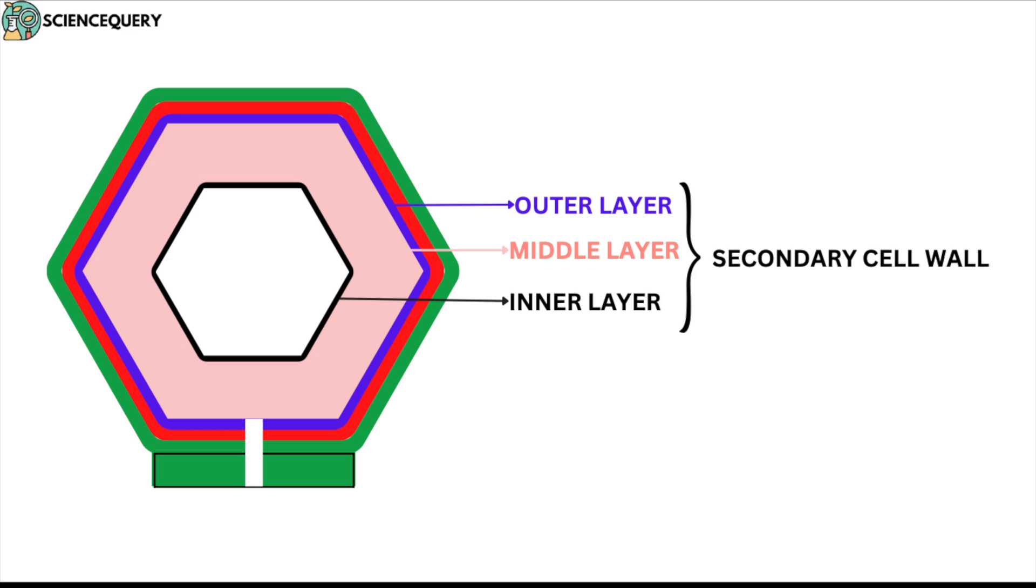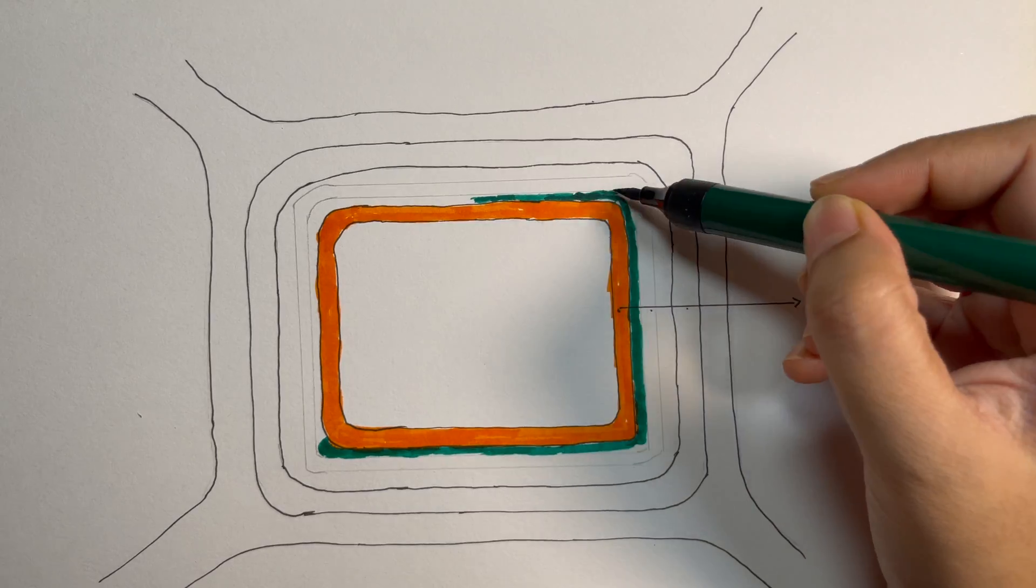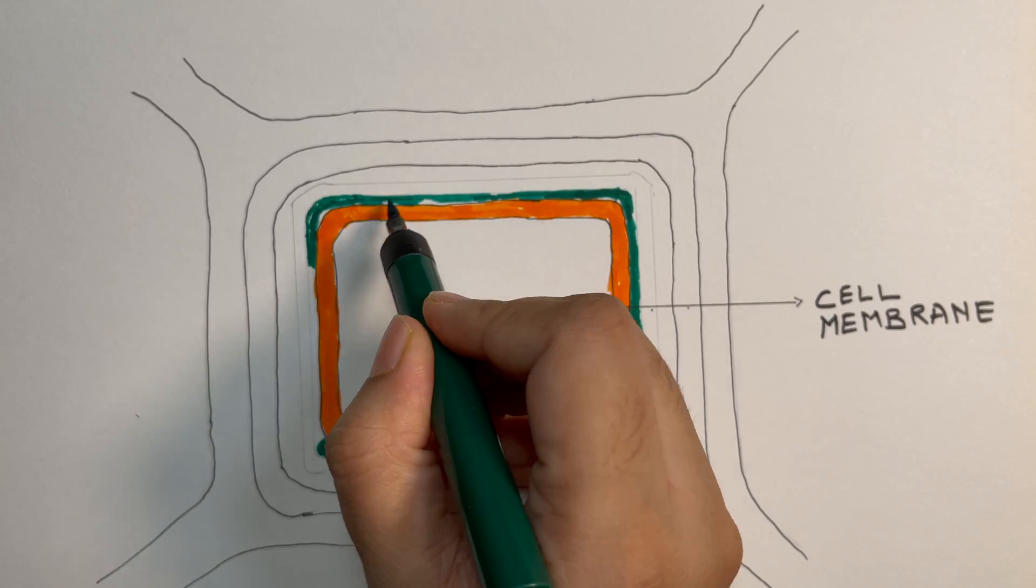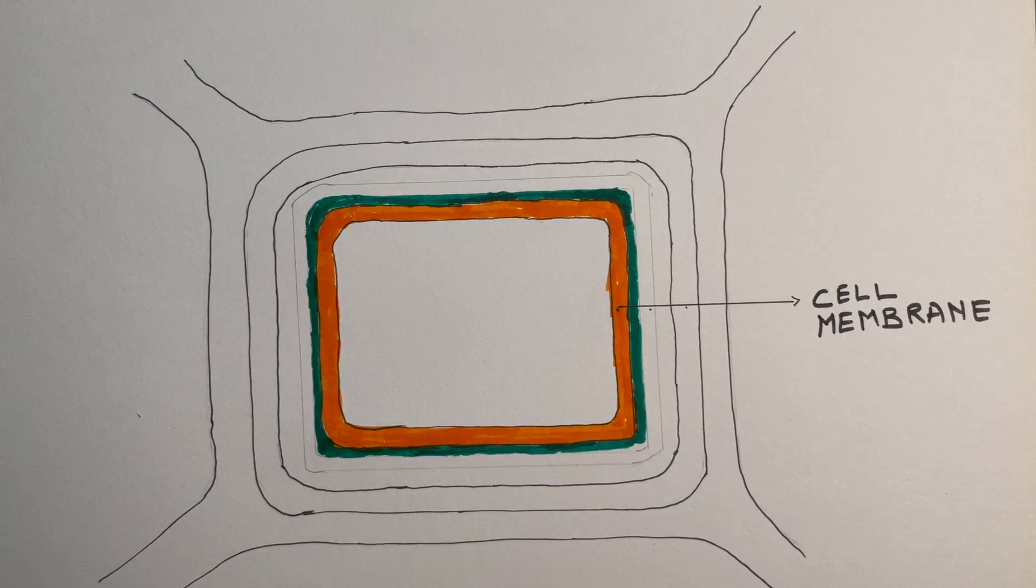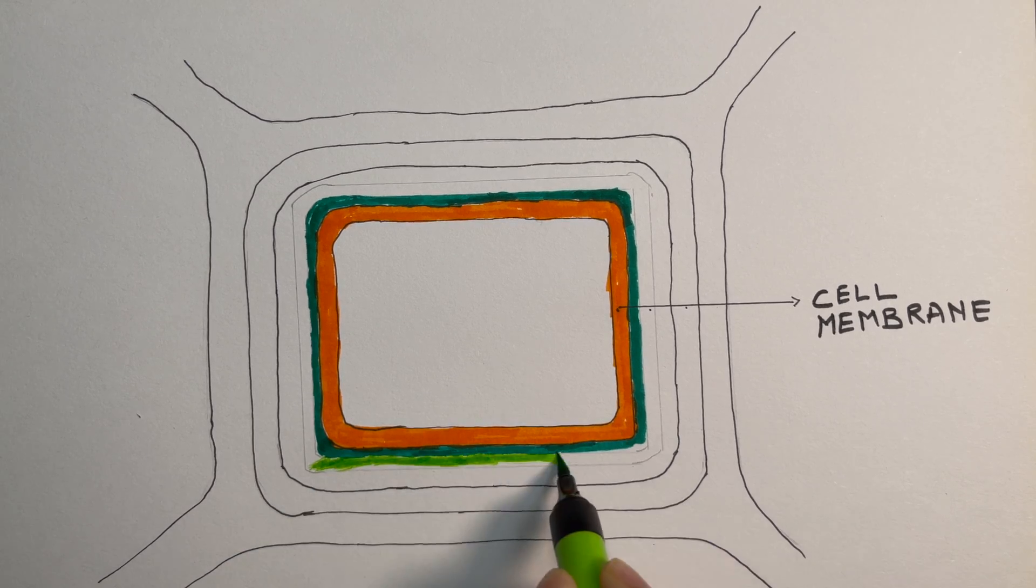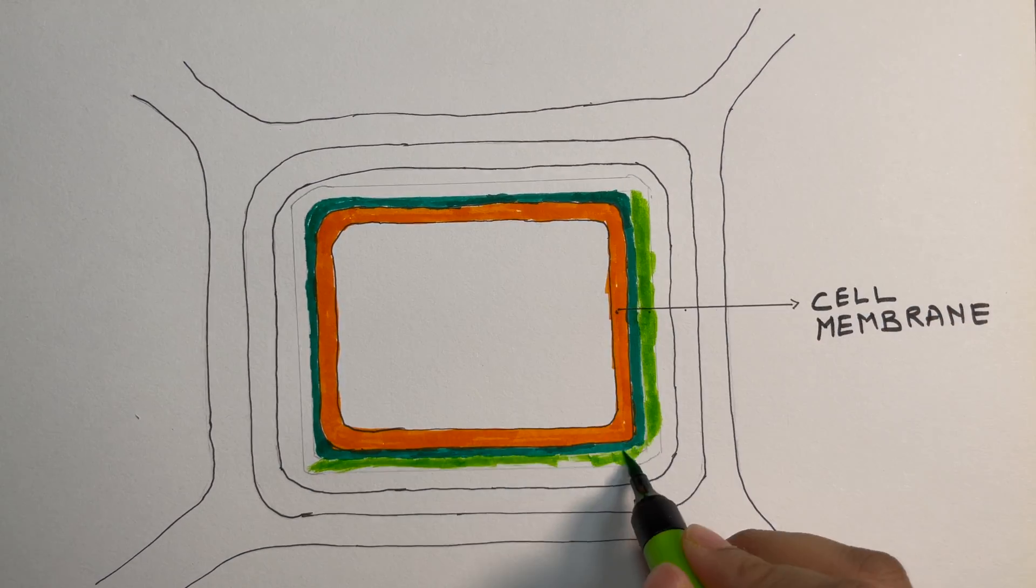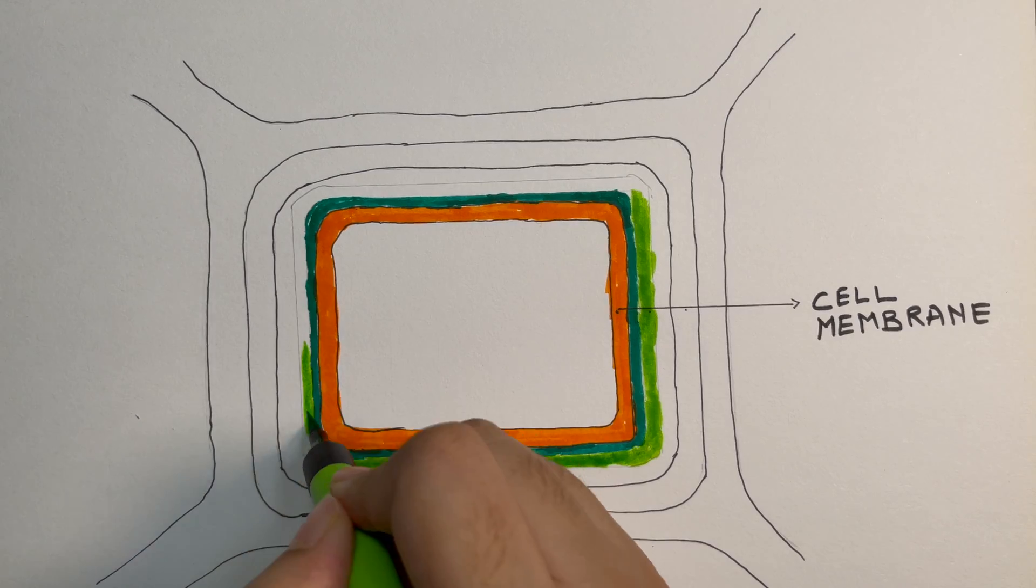The secondary cell wall is just outside the plasma membrane. It is differentiated again into outer, middle and inner layer. It is the thickest layer and the composition of this layer is 5 to 25 percent of hemicellulose and 50 to 90 percent of cellulose. Other components like xylan, lignin etc are also present in the secondary cell wall.